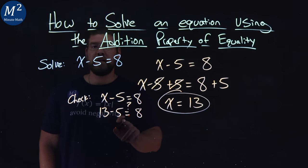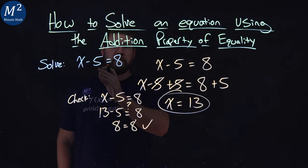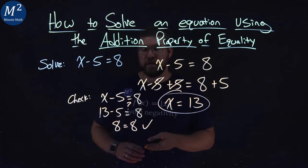Well, 13 minus 5, in fact, is 8. And we're good. Left and right-hand side are equal, confirming that the solution to our equation is x equals 13.